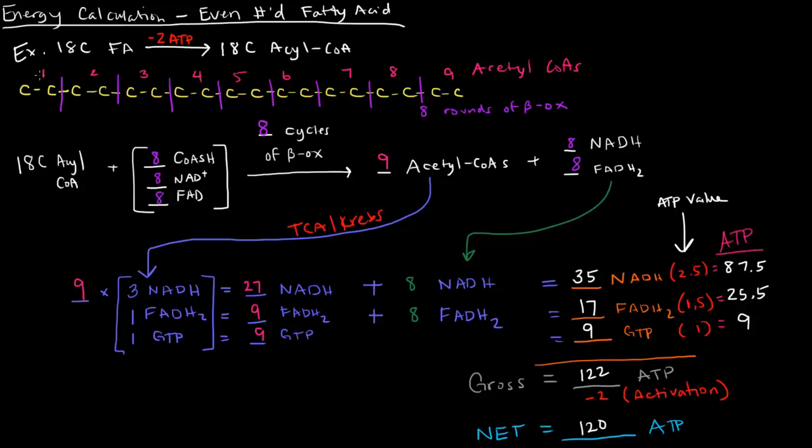However, if I had asked you instead to calculate the energy for an 18-carbon acyl-CoA, you wouldn't subtract this number here because the thing was already activated. You would not subtract 2 ATP if you had been asked for an 18-carbon acyl-CoA. Because an acyl-CoA is already activated, you wouldn't have to worry about that activation step. You would actually net 122 ATP, but that's only if you started off with an acyl-CoA.